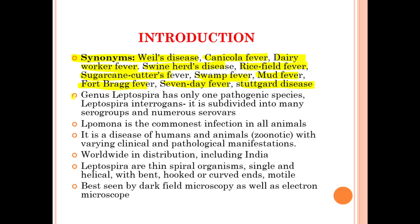The genus Leptospira has only one pathogenic species — Leptospira interrogans — and it is subdivided into many serogroups and numerous serovars. Leptospira pomona is the commonest infection in all animals. It is a disease of humans and animals, zoonotic in nature, with varying clinical and pathological manifestations.